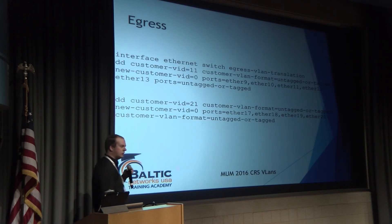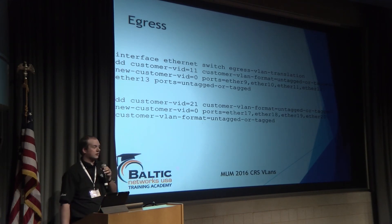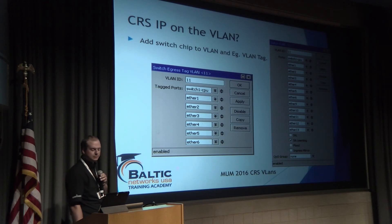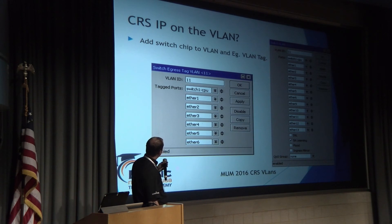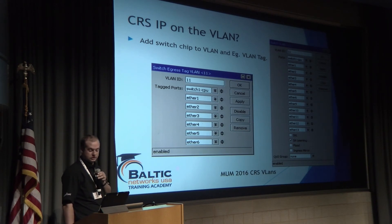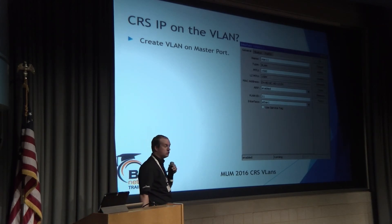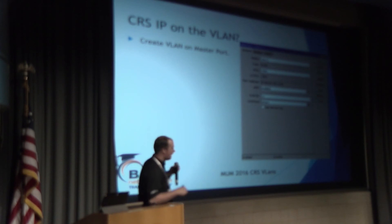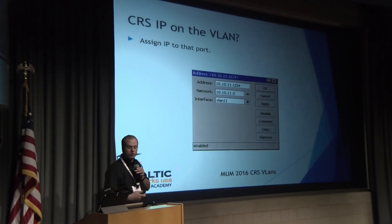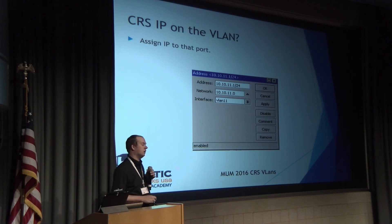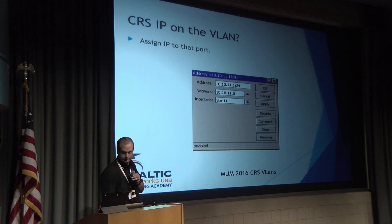For inter-VLAN routing or assigning an IP address so the switch can route or be pinged: go in and add the switch1 CPU into the VLAN tag for the VLAN and into the switch. Then create a VLAN interface on the master port — in this case Ether 1 — creating VLAN 11 on Ether 1. Then go into IP Addresses and assign it an IP address. Without firewall rules, this will allow routing between the different VLANs.